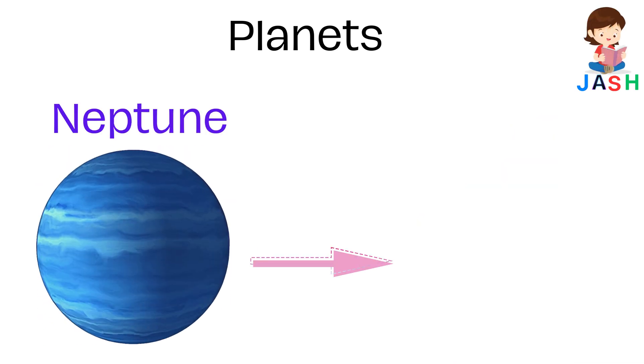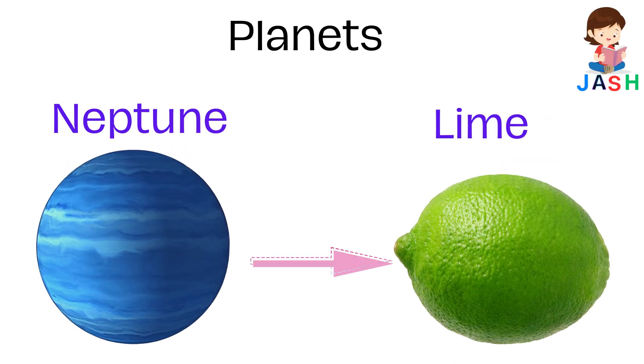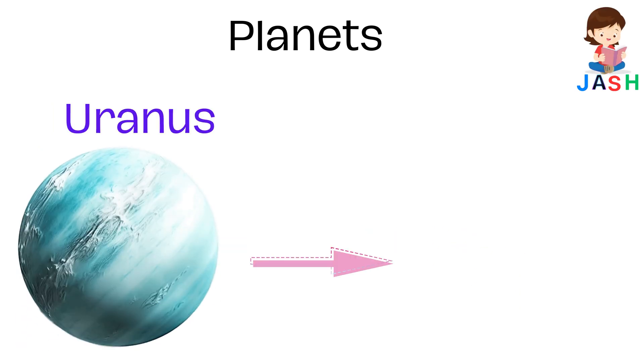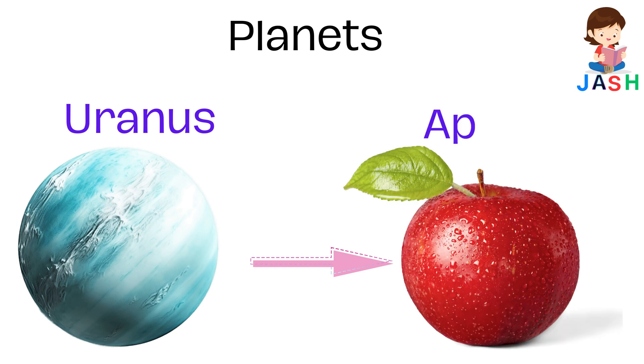Neptune, shape is like lime. Uranus, shape is like apple.